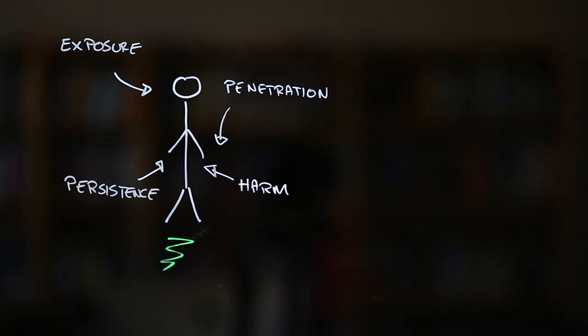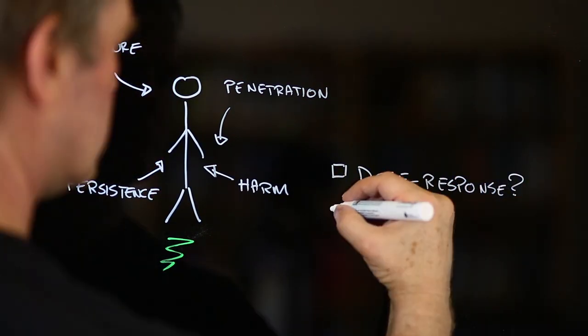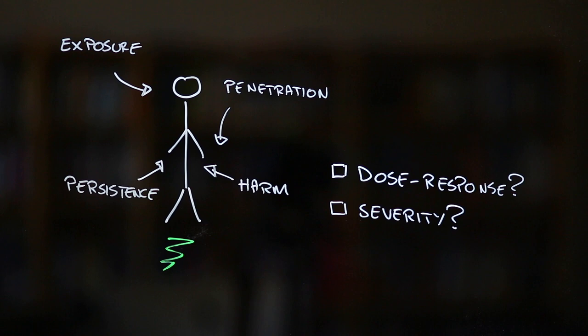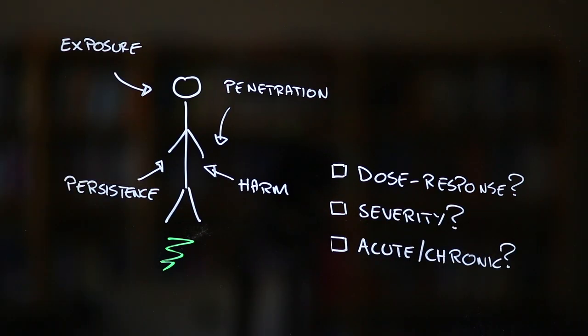The problem is, it's hard to tell how much graphene might be needed to cause a problem, whether any damage that occurs as a result will be mild or harsh, or if it'll be short-lived or long-lasting.